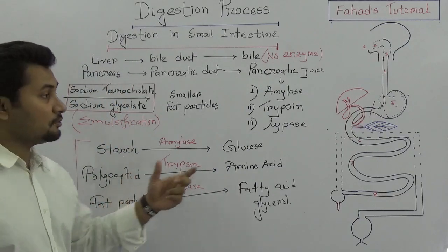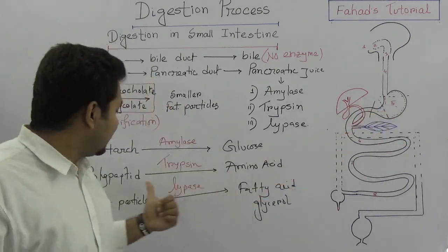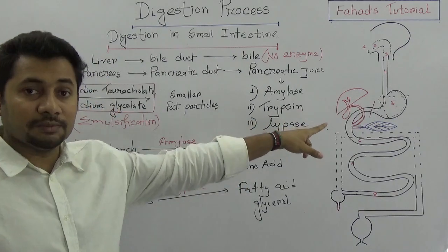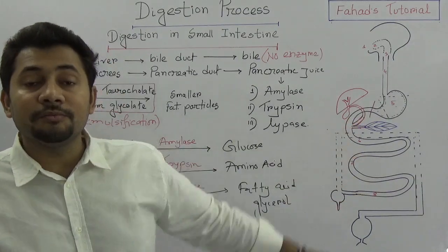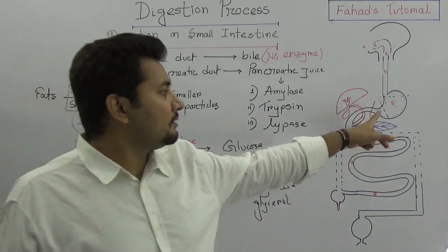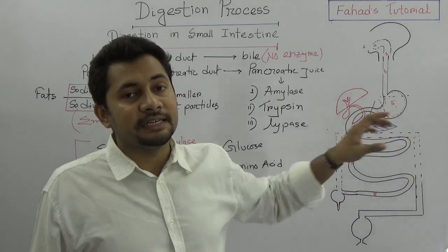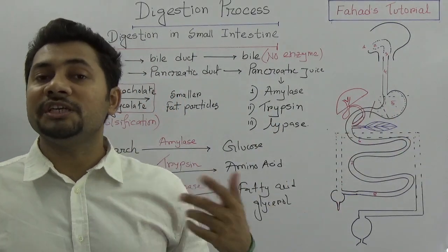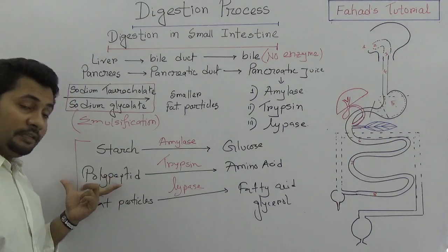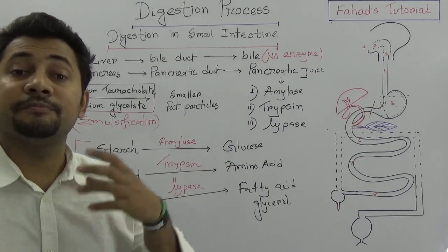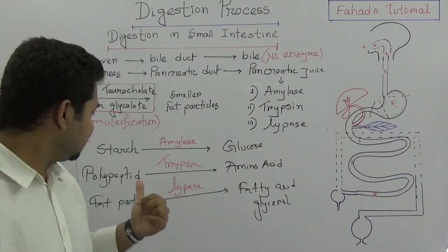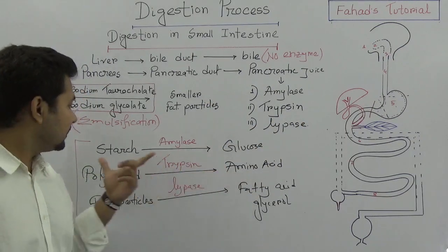The polypeptide that was partially digested in the stomach is turned into amino acids by trypsin. The starch was not digested in the stomach because there are no amylolytic or glycolytic enzymes there — only proteins are digested in the stomach. Polypeptides were the partially changed versions of proteins, activated through pepsin and renin.